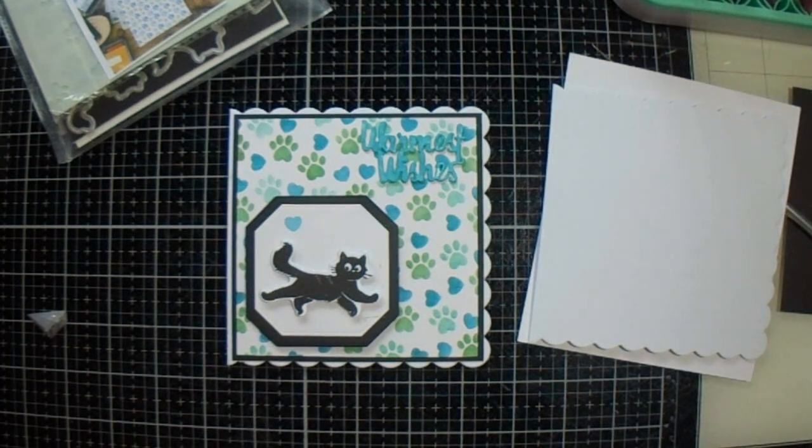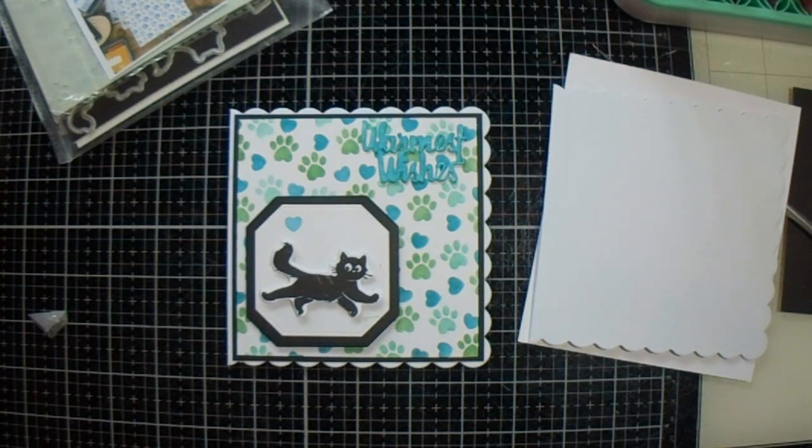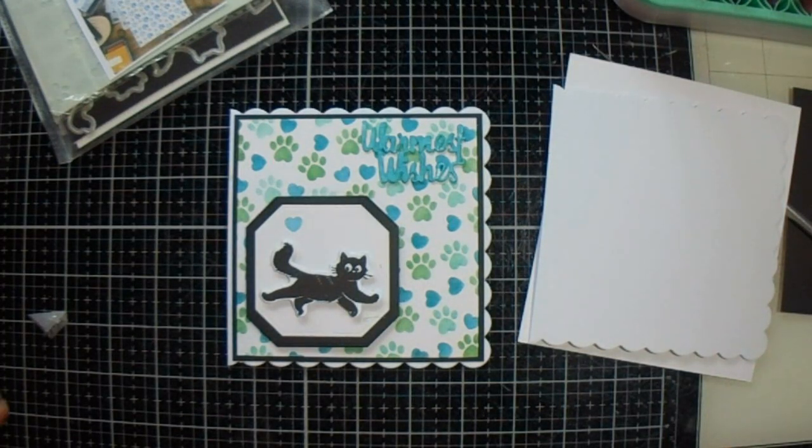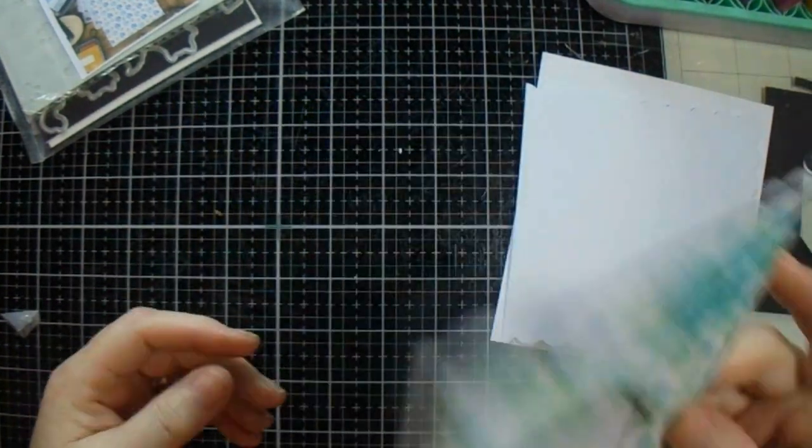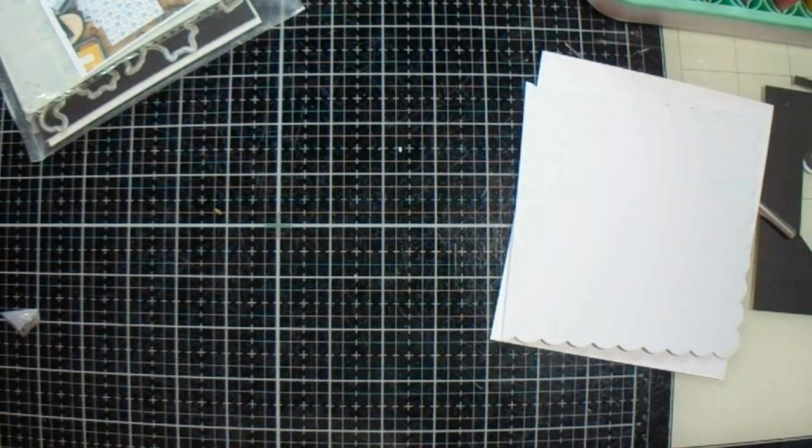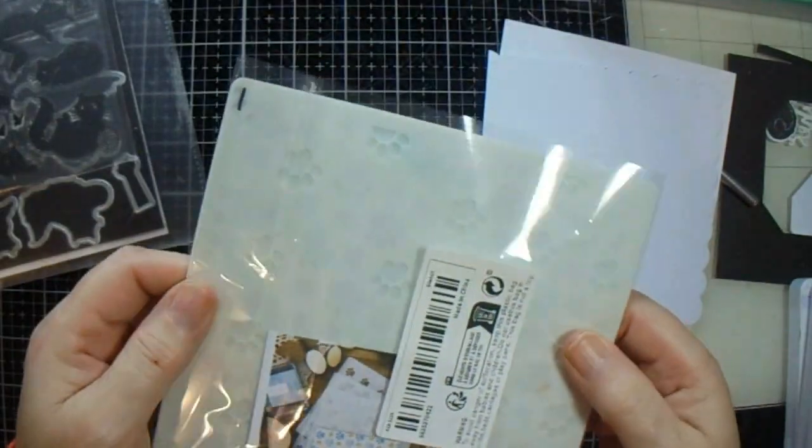Good afternoon everyone, welcome back to JMC Creates. My name is Jackie McKissick and today we're going to make a version, a different color of this card. I got this stencil set from Temu with paw prints and hearts.